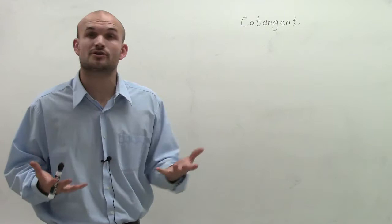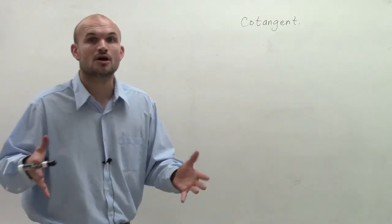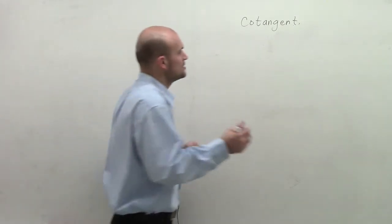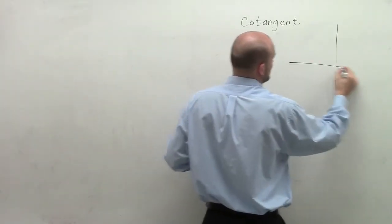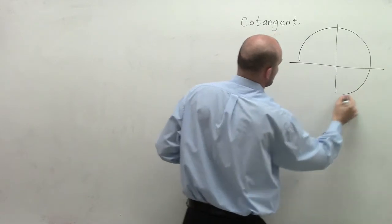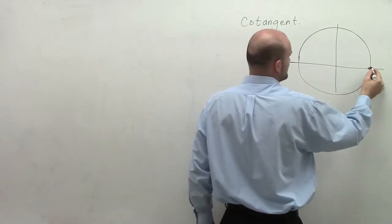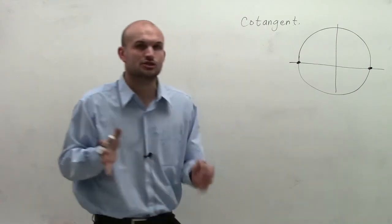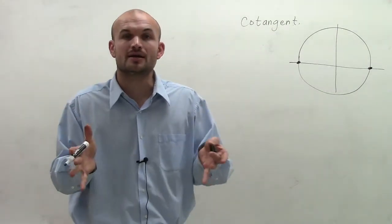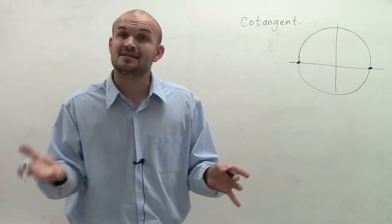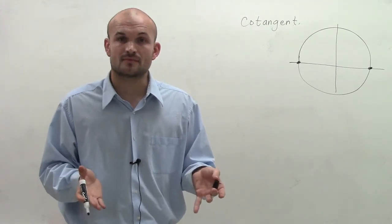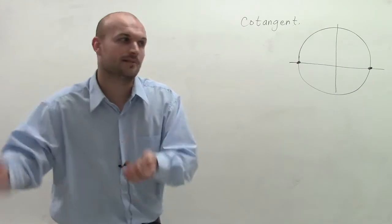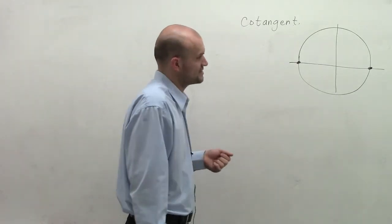Like all other trigonometric functions, to graph the cotangent we first need to do a table of values. To complete our table of values, it's helpful to evaluate cotangent using the unit circle. I'm only really going to be concerned about the first two quadrants, because I want to show the initial period of the cotangent function. And since cotangent is reciprocal, we can keep repeating the cotangent function.